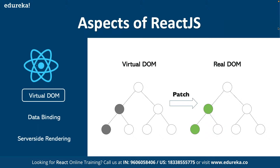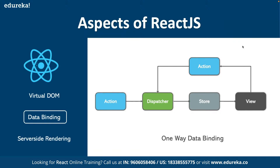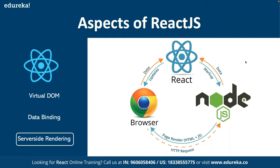React also has the concept of data binding — but only one-way data binding, not two-way like in Angular. Any action taken from the view, for example a button click, is linked to an action handled by the dispatcher, then the required data is fetched from the store. React also offers server-side rendering, where changes are rendered on the server's end to provide better performance by reducing the number of local requests.